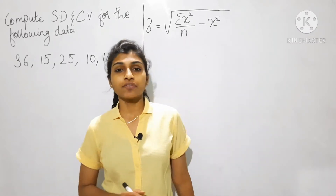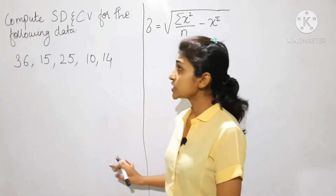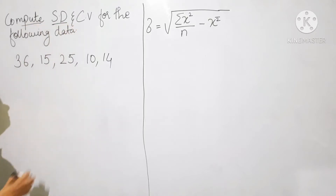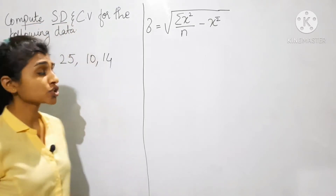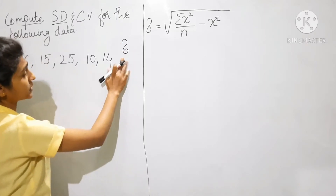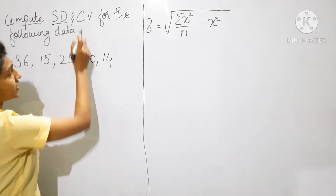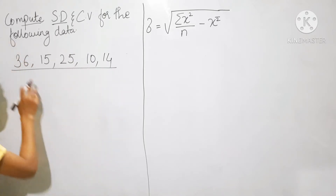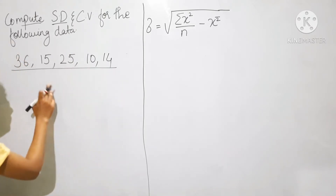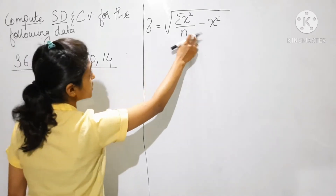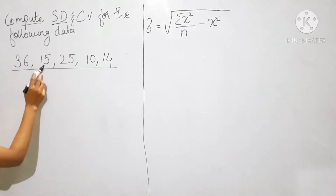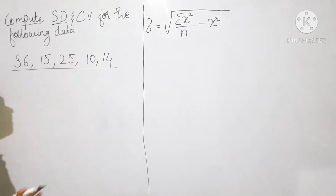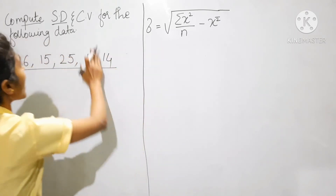We will now see the example of standard deviation and coefficient of variation. In this example, they have asked us to compute SD — standard deviation, also denoted as sigma — and CV, that is coefficient of variation, for the following data. This data is individual observation, so we are going to use this formula. The data is: 36, 15, 25, 10, 14. We have to compute standard deviation and CV.